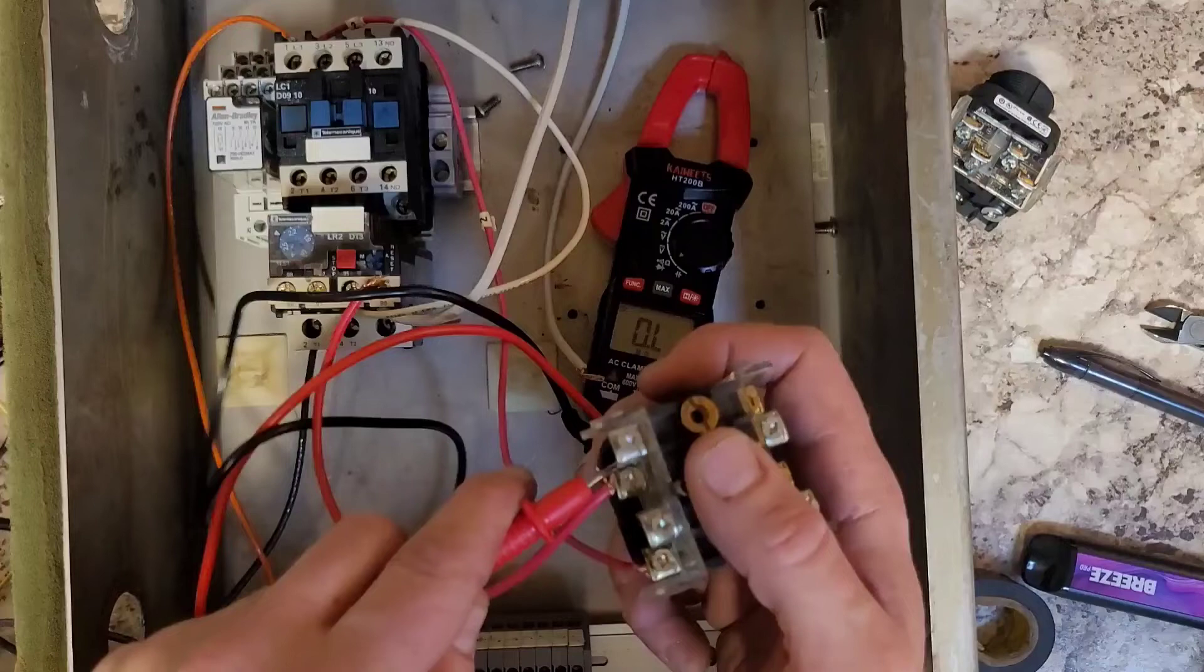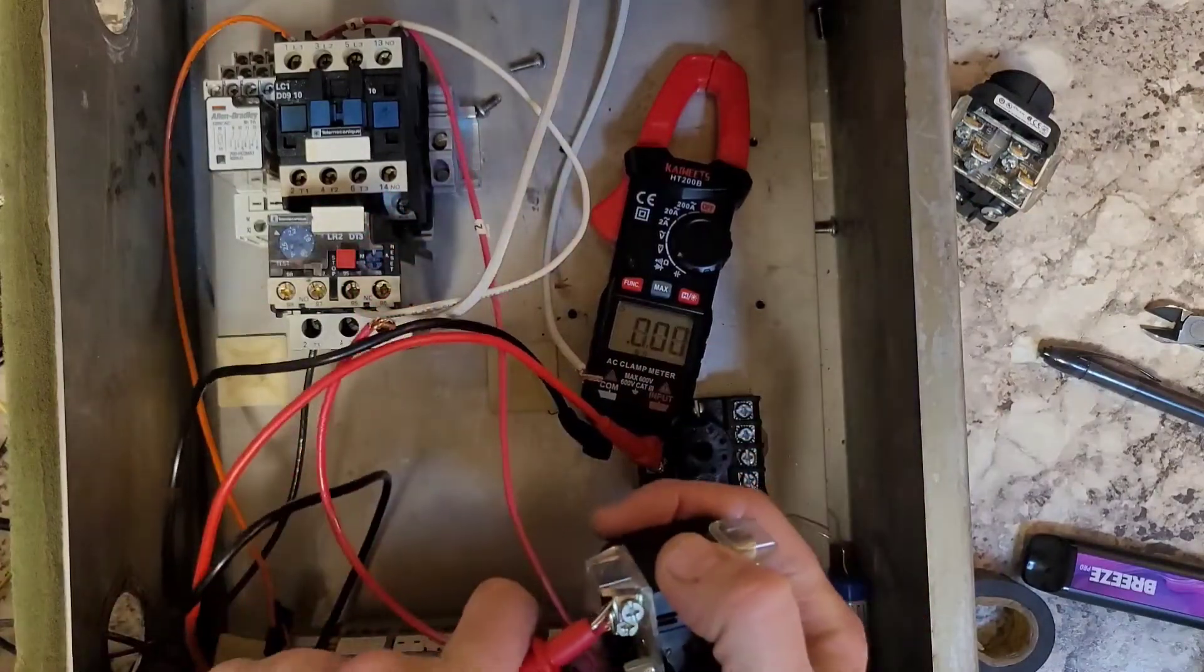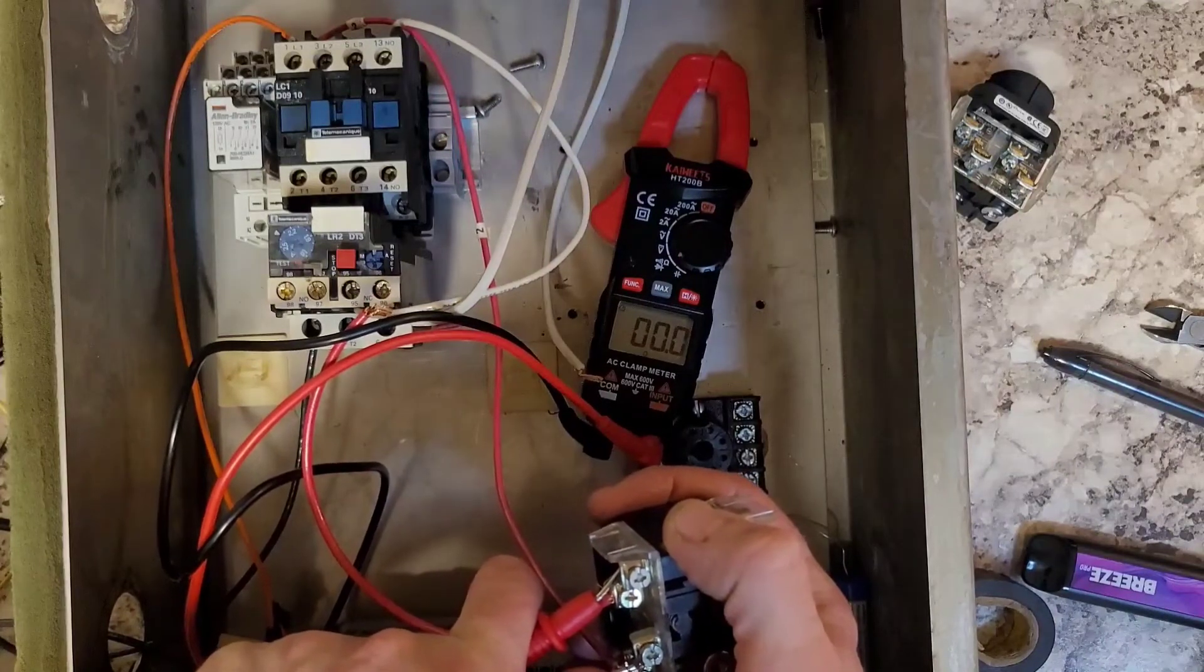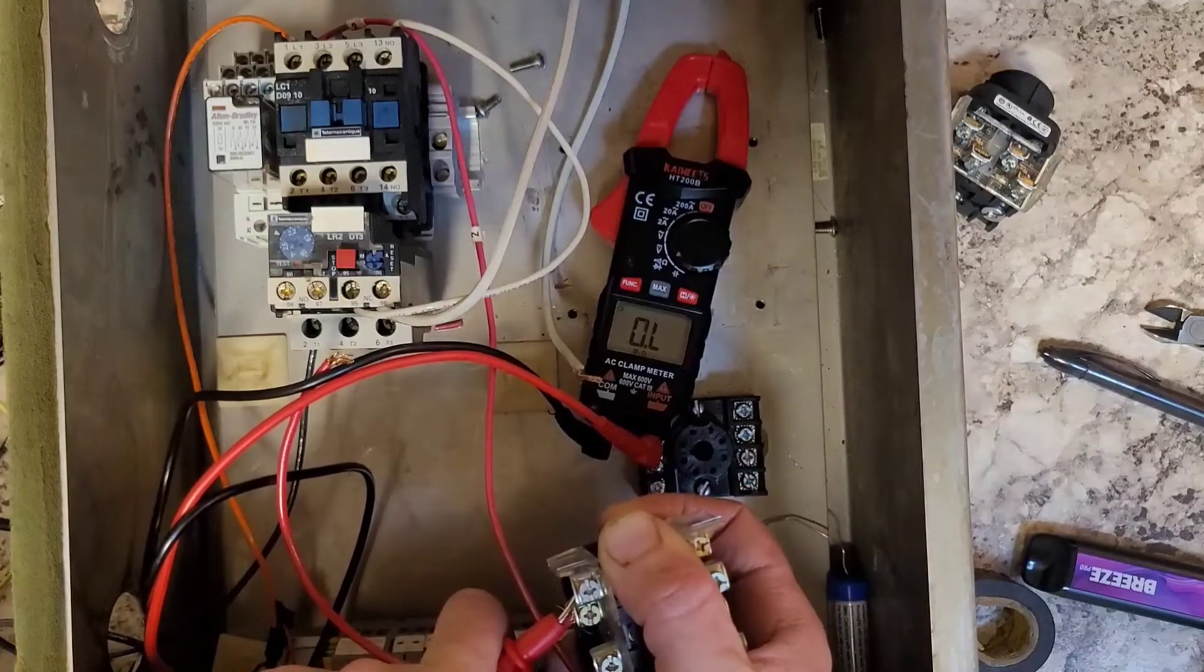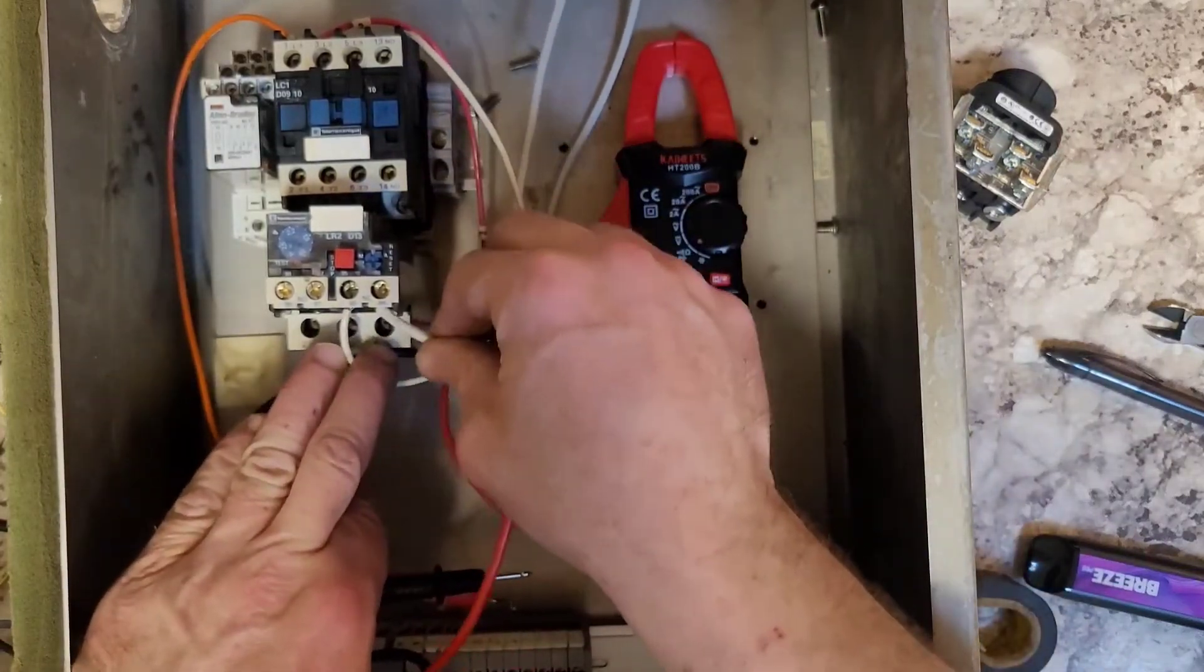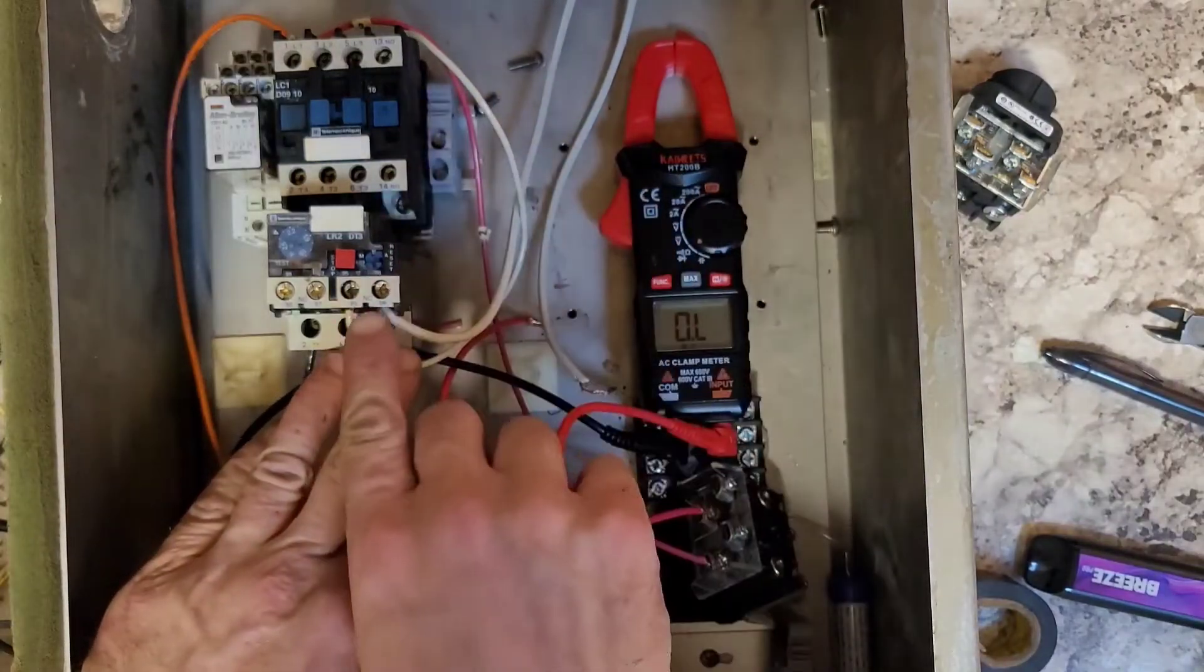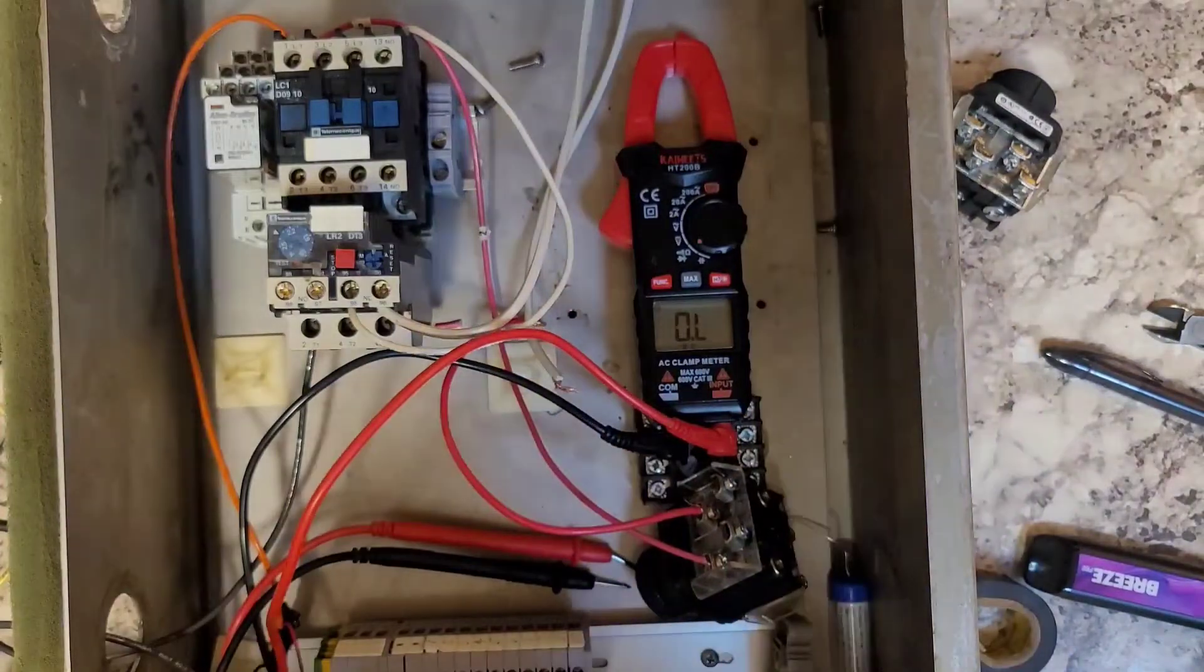This one here I already know - that's a closed circuit, you can see the ohms reading. Push that and it opens up, so that'll be our stop. Then like I discussed, this is our overload. When this says 'you're too high of current,' it will open up this normally closed set of contacts right there.